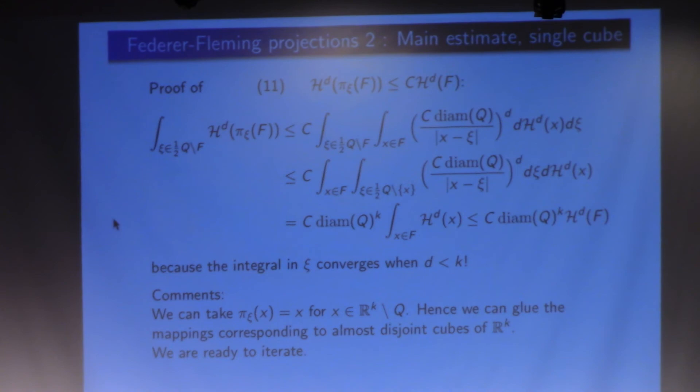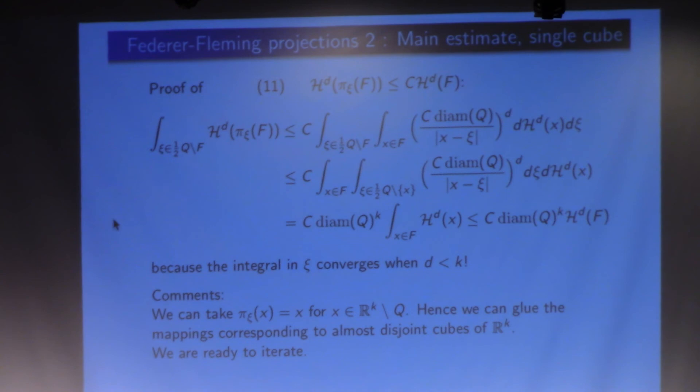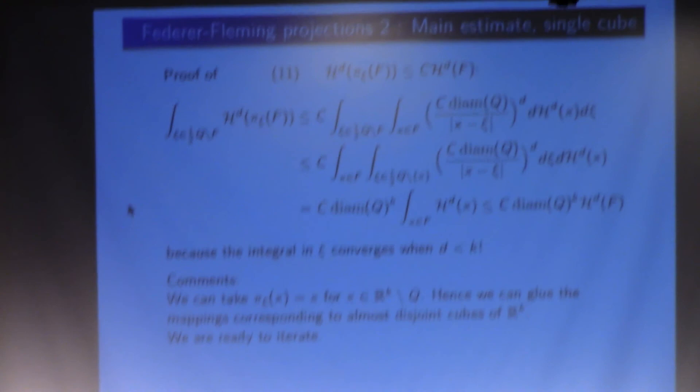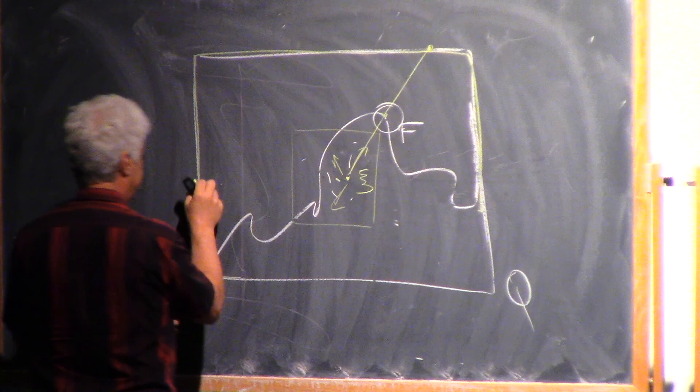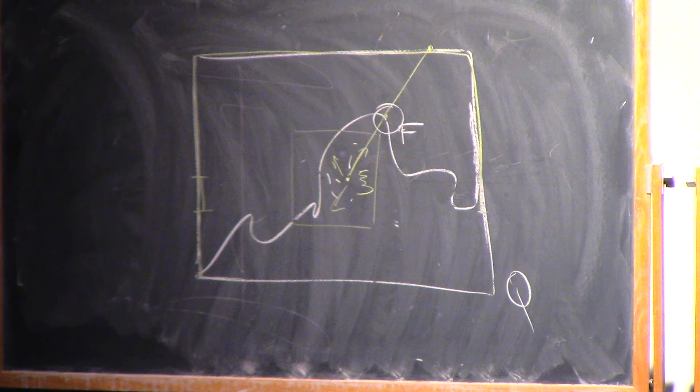The important part was that the inner integral converged, no matter what the point x was, to something bounded. After Fubini, you recuperate the measure of the set F you started with. So on average, things act as if the projection were C-Lipschitz with some constant — and that's what we want. That was step one of Federer-Fleming. Step two is you do it again.